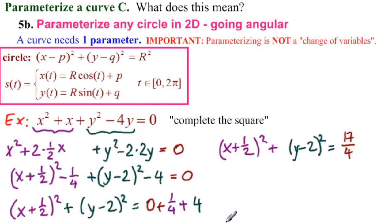So, what can we conclude? We can conclude that p equals how much? Notice that there's a plus here and a minus here. So, it's minus 1/2. We can conclude that q equals 2. And finally, we can conclude that r equals the square root of 17/4 equals √17 over 2.